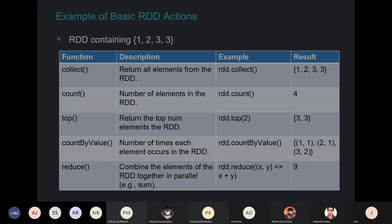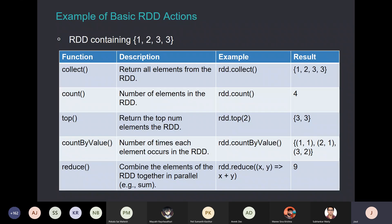Now we've seen some examples of transformation operations. We are going to see some examples of action operations. Let's again consider the RDD containing one, two, three, three. One thing to point out: you should not confuse the fact that the variable name need not be 'rdd' — it could be any variable name. I'm just using rdd here for convenience, but you can put any variable name as you would in any program.